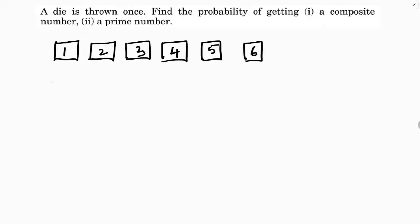The first question is probability of a composite number, probability of getting a composite number. Before that,